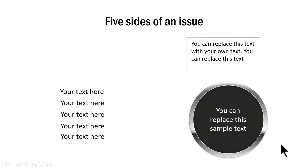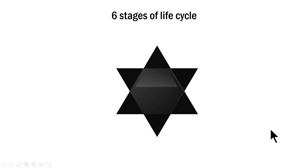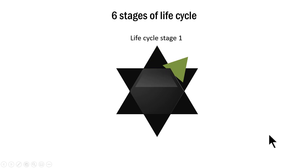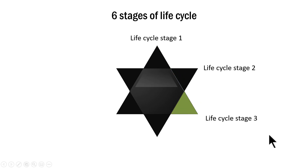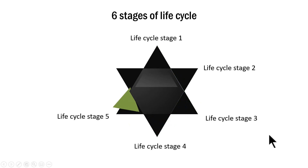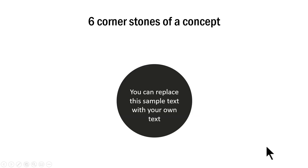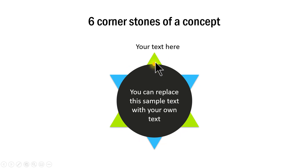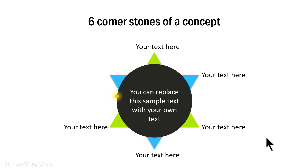Here is another example of drawing the viewer's attention to different parts of a graphic — a six-stage life cycle. On a click, we bring attention to the first stage, then shift to the second, third, fourth, fifth, and sixth stages, finally closing by returning to stage one. Another example shows six cornerstones of a concept: the central one is explained, then viewer attention moves to the first object, then the next, and so on through all six.